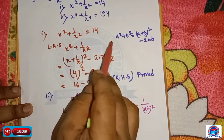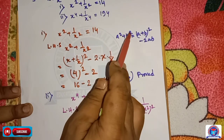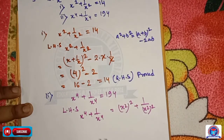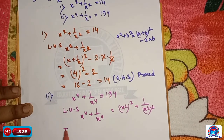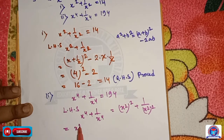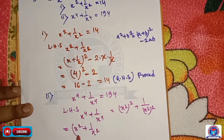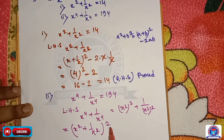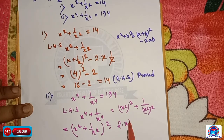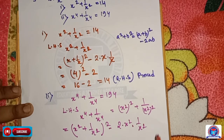We use the a square plus b square formula, so it becomes x square plus 1 by x square its whole square minus 2 into x square into 1 by x square.